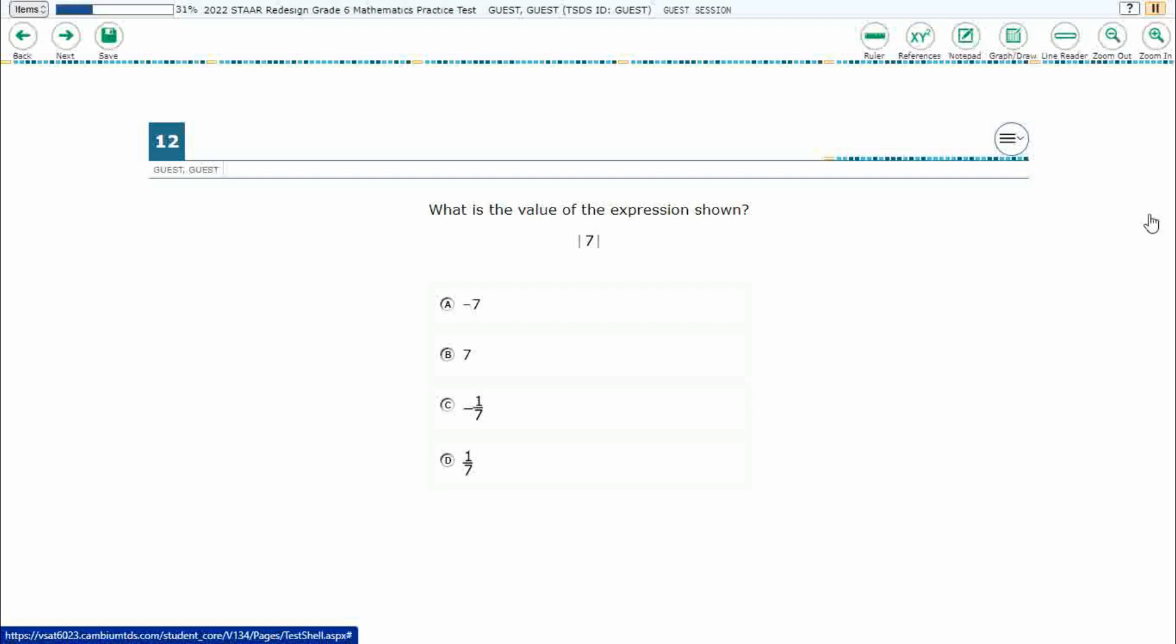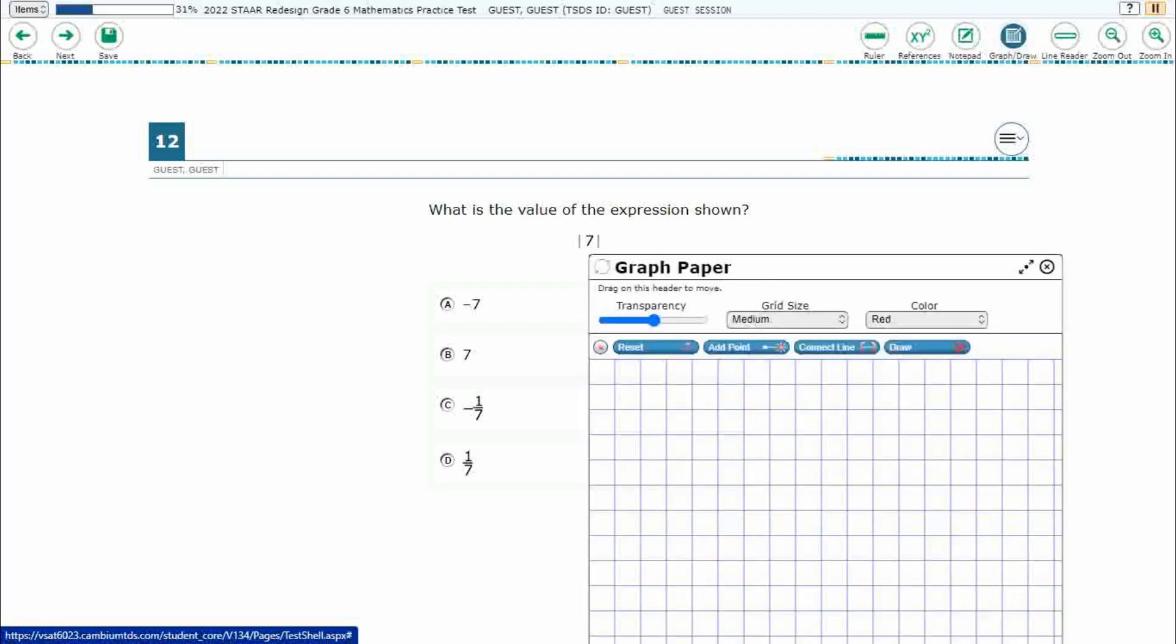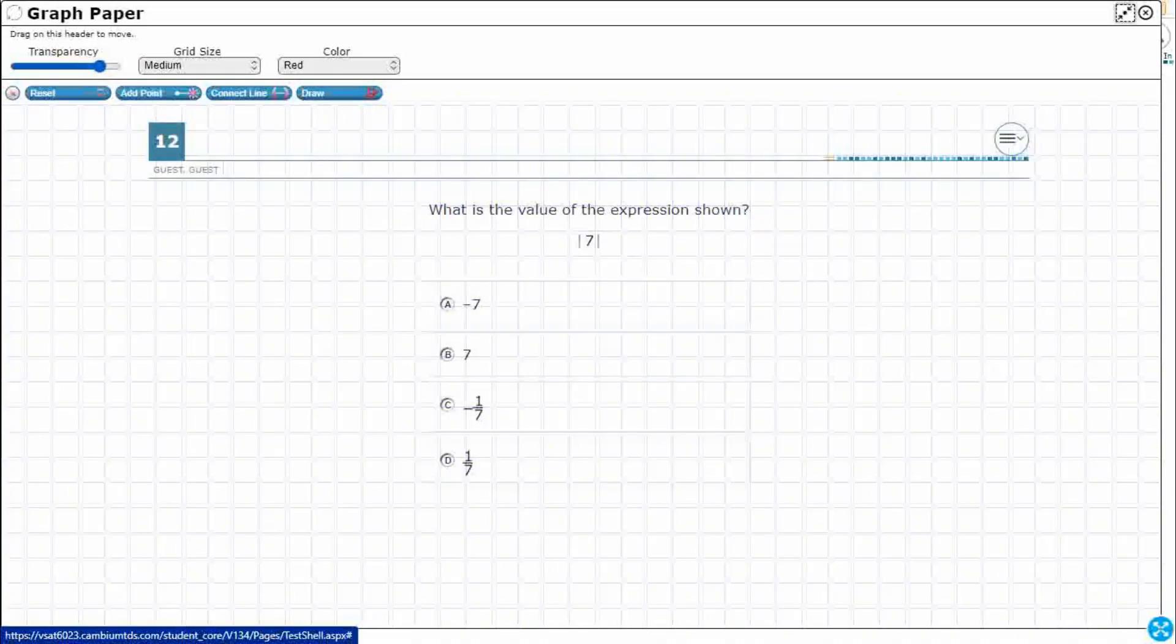So, it seems like a pretty straightforward problem here. We just need to find the value of this expression. So I'm going to open up my Graph Draw feature, and here is the million-dollar question. What does it mean when we've got those straight lines? I'm going to make it a little bit bigger here. Those straight lines on either side of that 7.